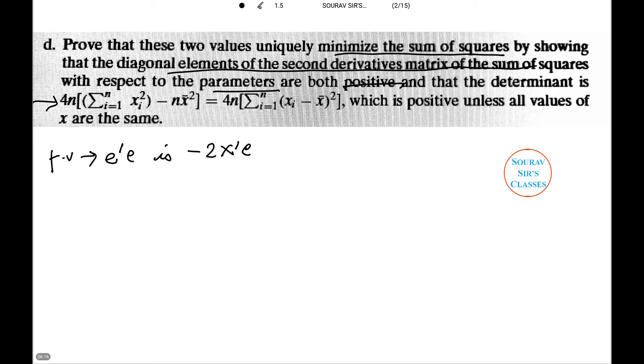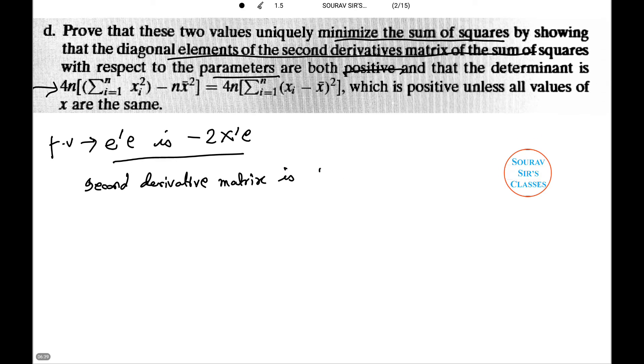The second derivative matrix is d^2(e^T e)/db db^T which equals 2 X^T X. We need to show that the matrix is positive definite.